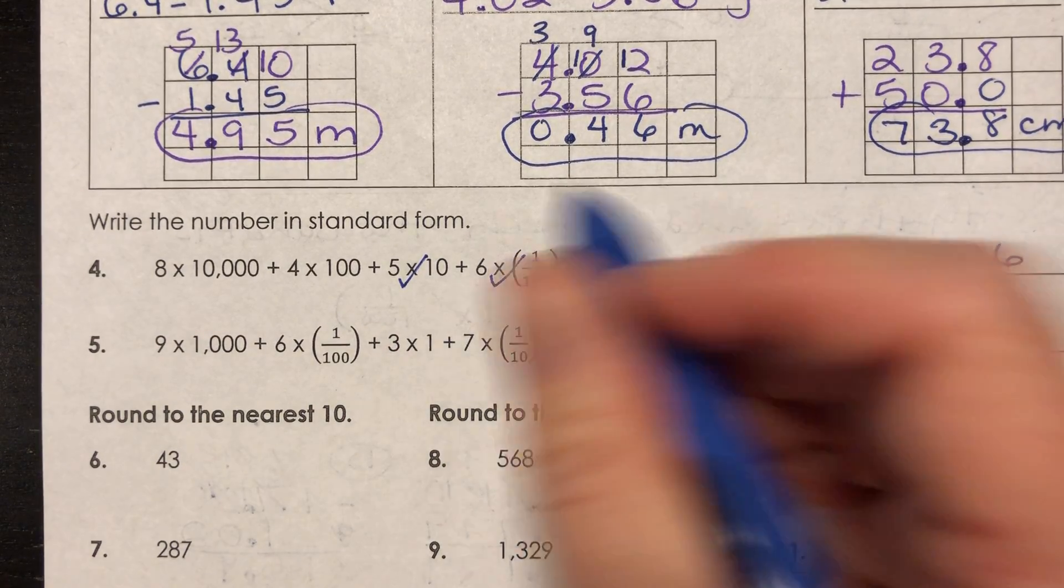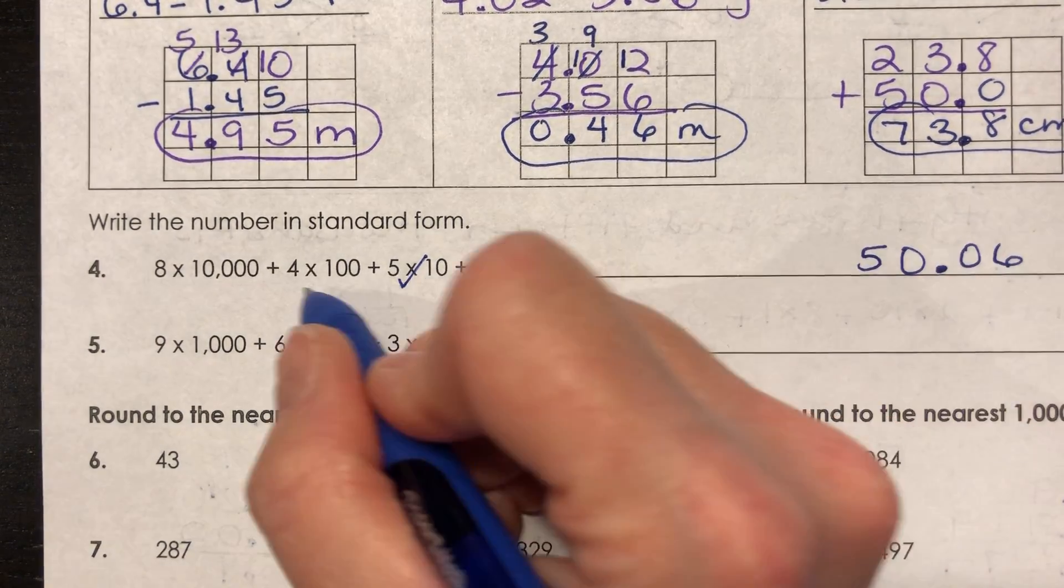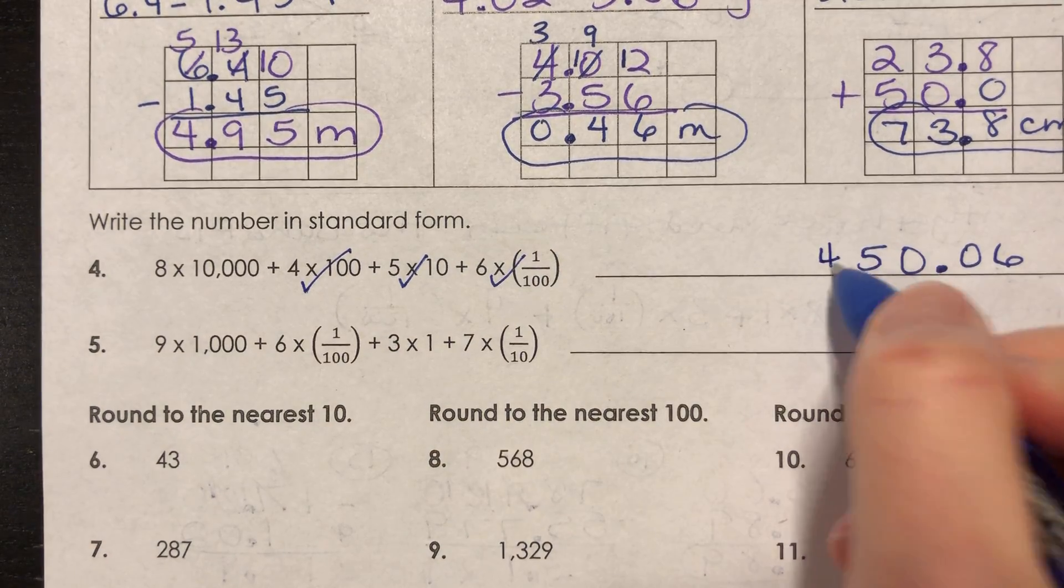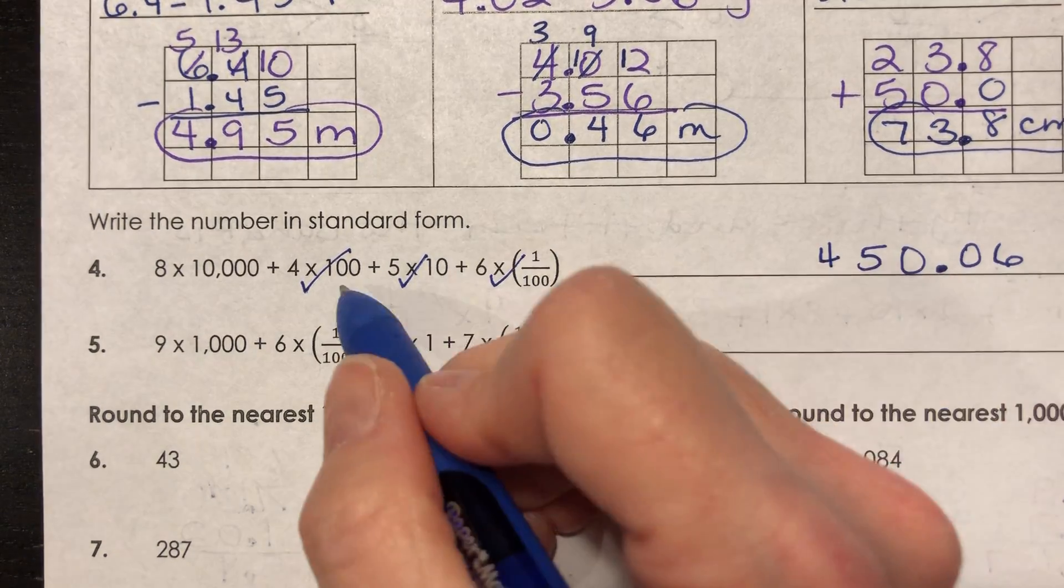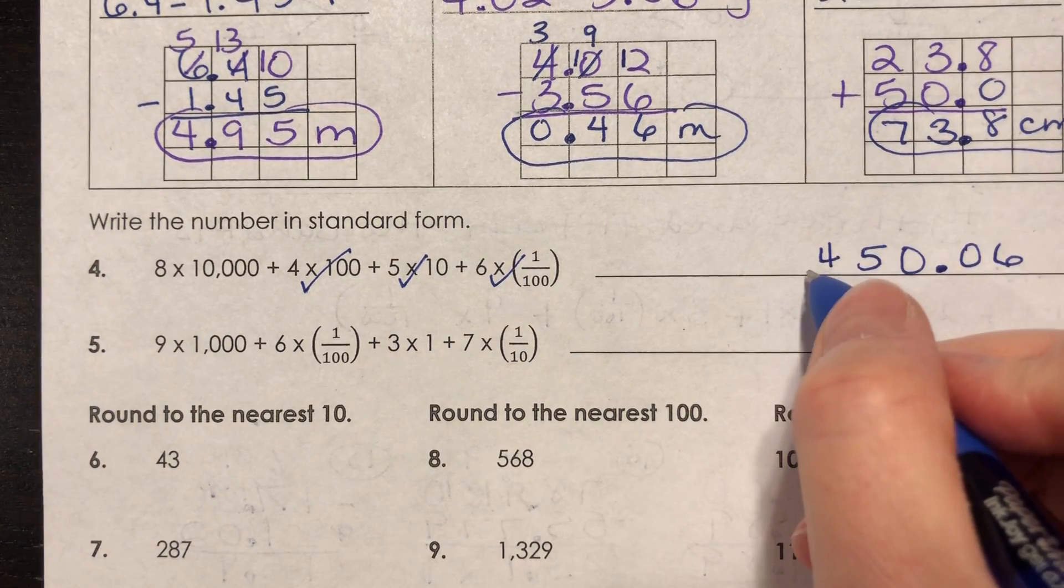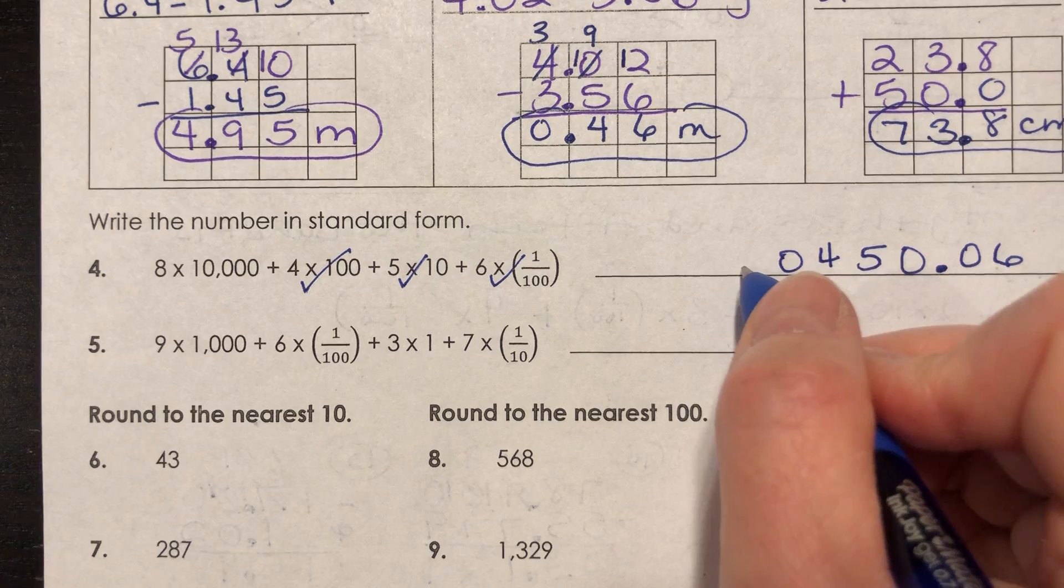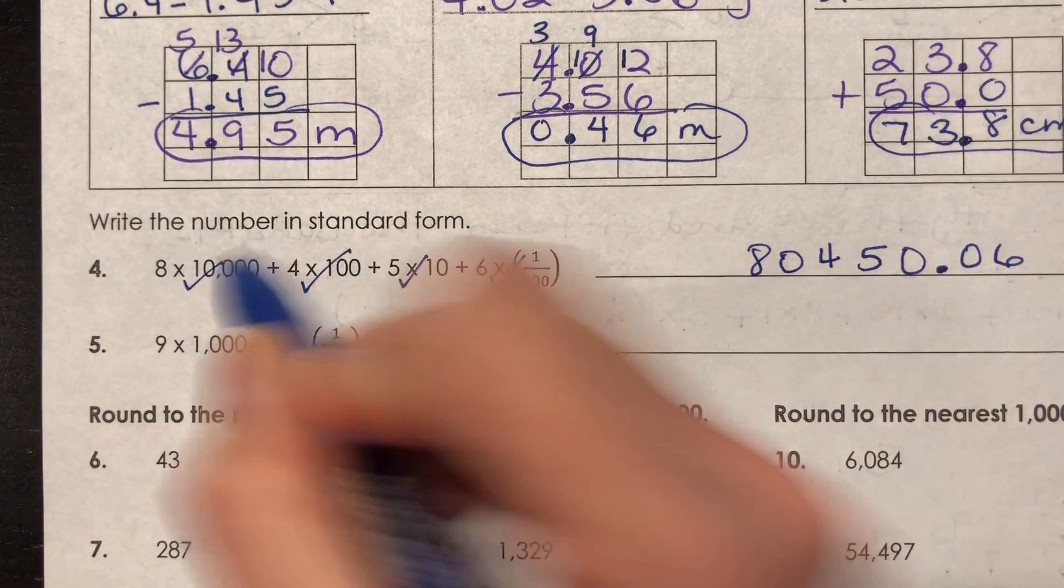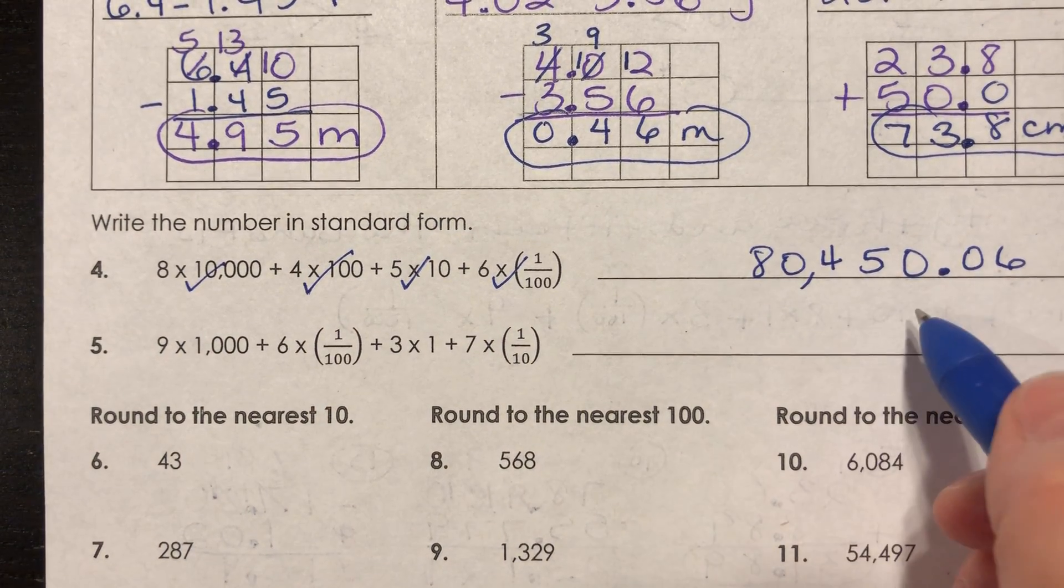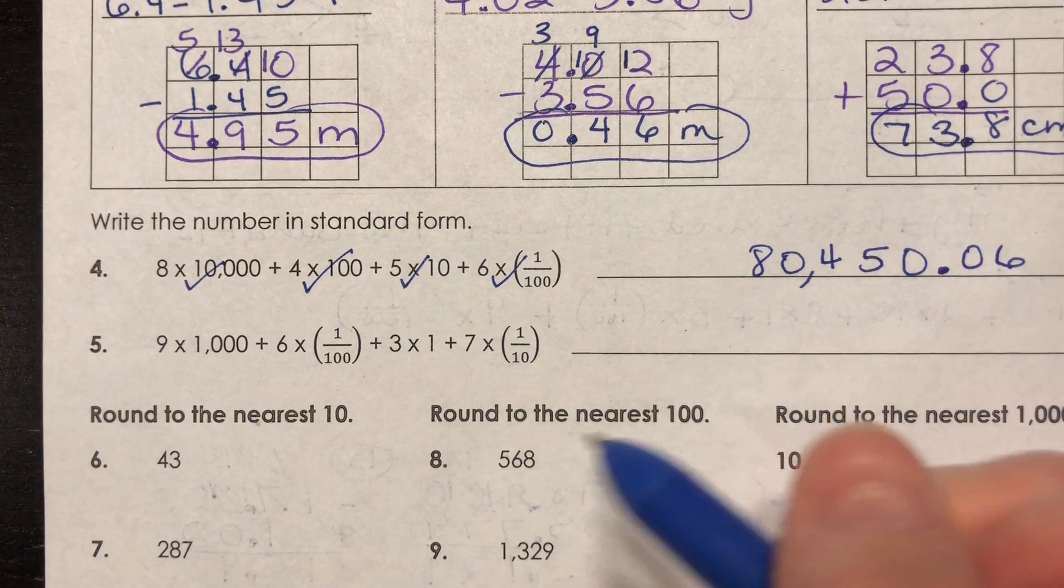The next one over would be the tens place, and I do see five times 10, so I'll put a five in the tens place. The next one over from the tens would be the hundreds, and I see a four in the hundreds. The next one over from the hundreds would be the thousands, and as I look through, I don't see anything multiplied by a thousand. And the next one over from a thousand would be 10,000, and there should be an eight in that place. So 80,450 and six hundredths is what you should have.